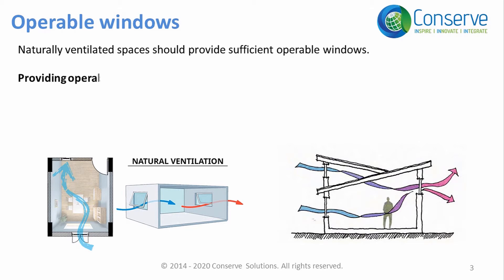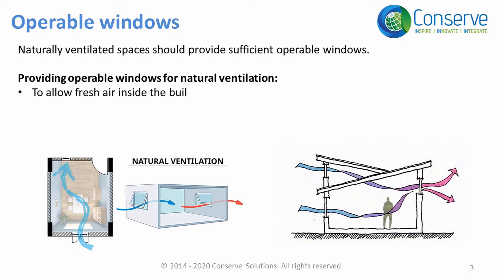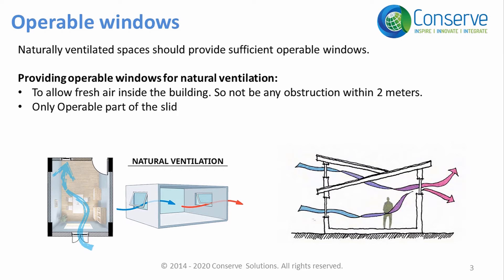There are two points to be considered when providing operable windows for natural ventilation. Number one, the purpose of operable windows or doors is to allow fresh air inside the building, so there should not be any obstruction within 2 meters from the windows or doors. Number two, only the operable part of the window can be considered for the calculation in case of sliding windows.